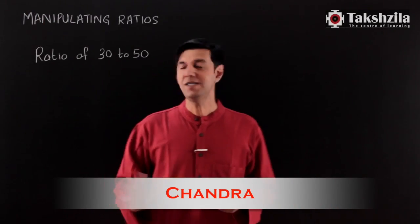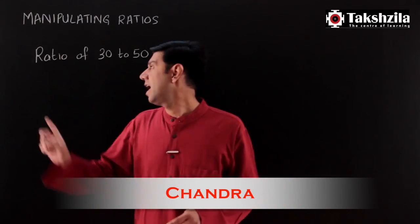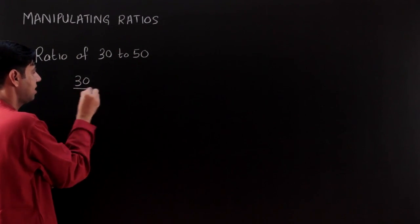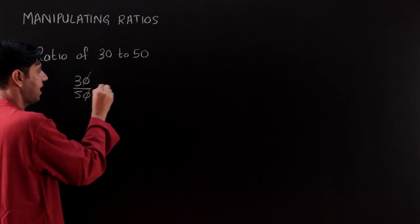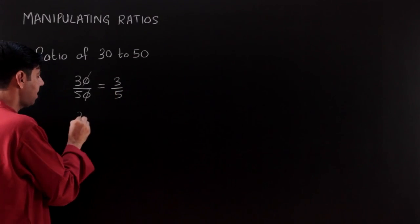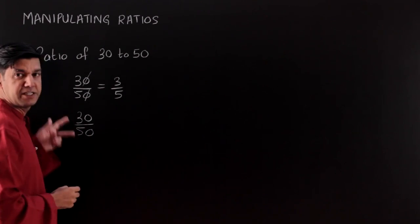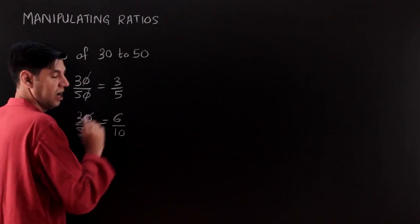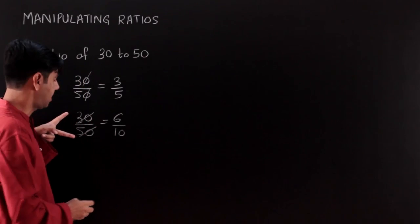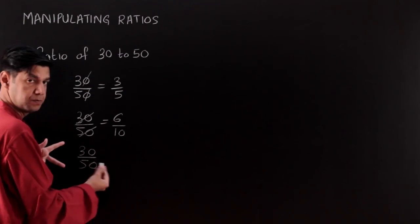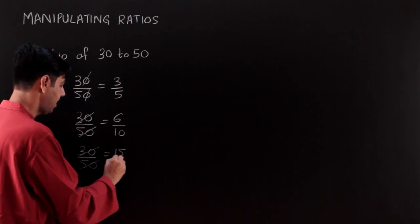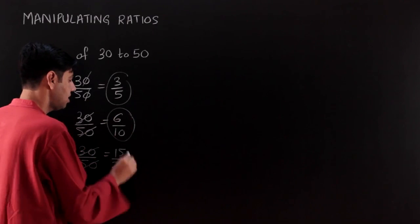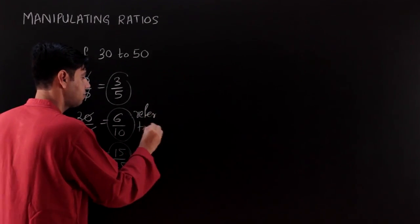In this session we are going to learn manipulating ratios. In the first session we learned that the ratio of 30 to 50 is a comparison by division. We cancel out the common factor 10 and find the ratio as 3 by 5. Dividing by 5 gives 6 by 10, and dividing by 2 gives 15 to 25. However, all three values refer to the same ratio.